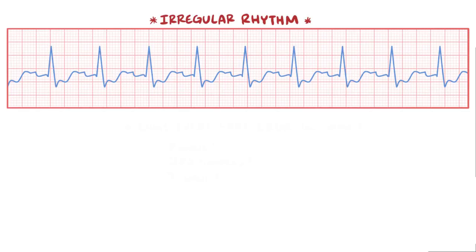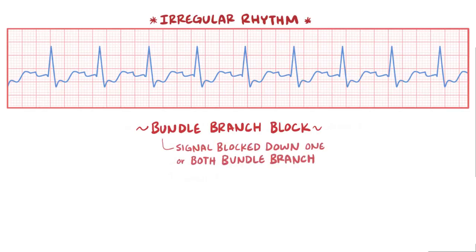Alternatively, an odd-looking waveform might have originated from the normal spot, which is the SA node, but then gotten thrown off course, which is what happens when there's a block someplace. In this example, there's a bundle branch block, which is where the signal can't go down one or both of the bundle branches, and this usually results in these wide QRS complexes.